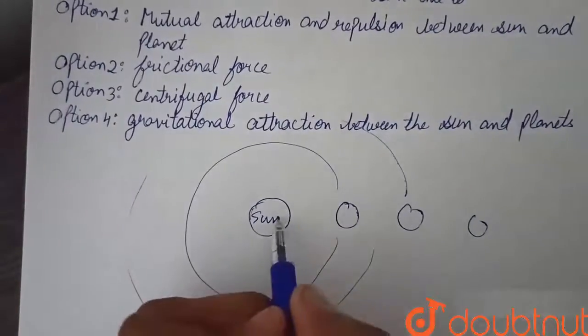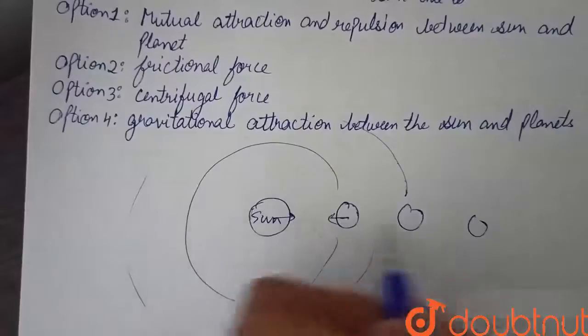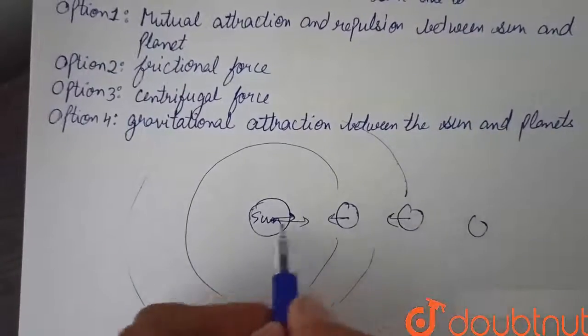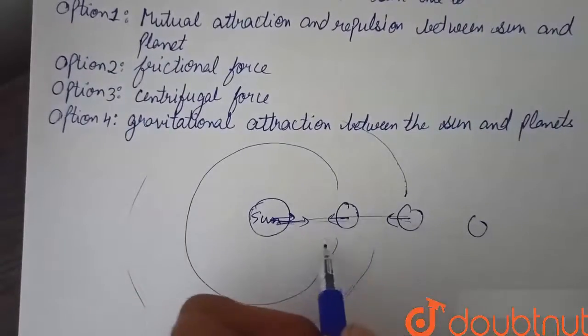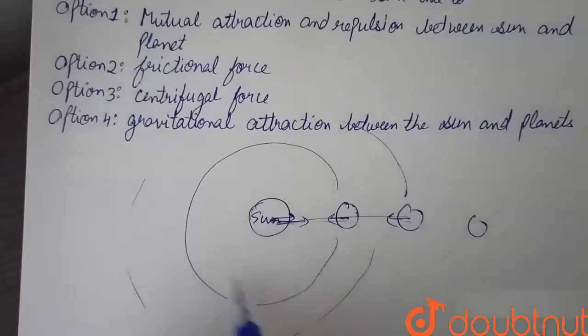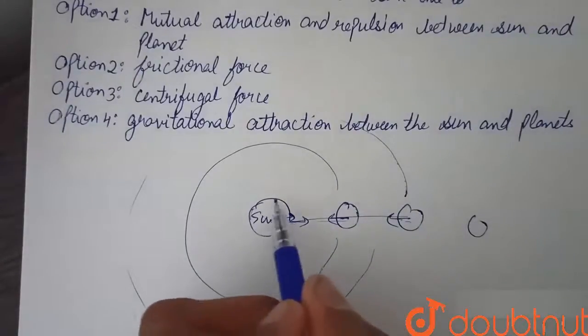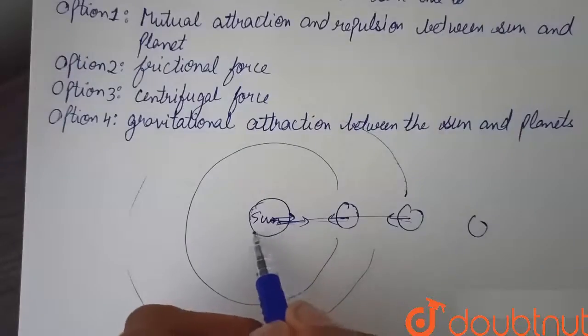So there is a force of attraction between sun and planets which bound them in a circular orbit around which they revolve around sun.